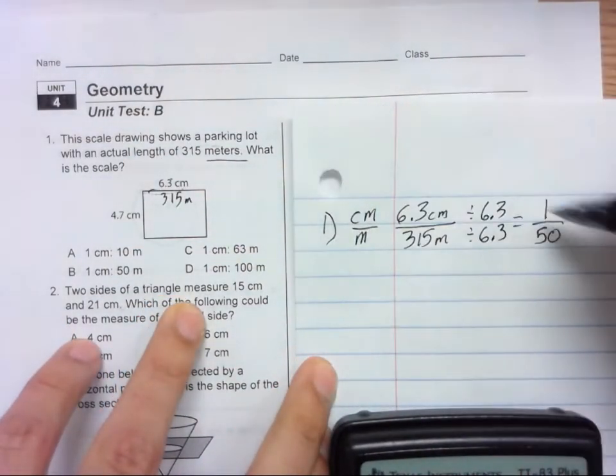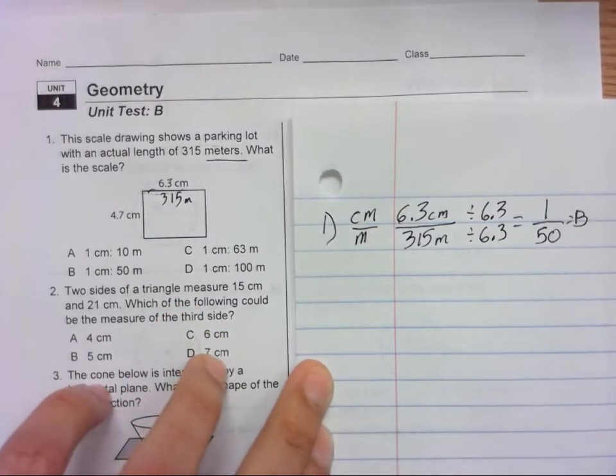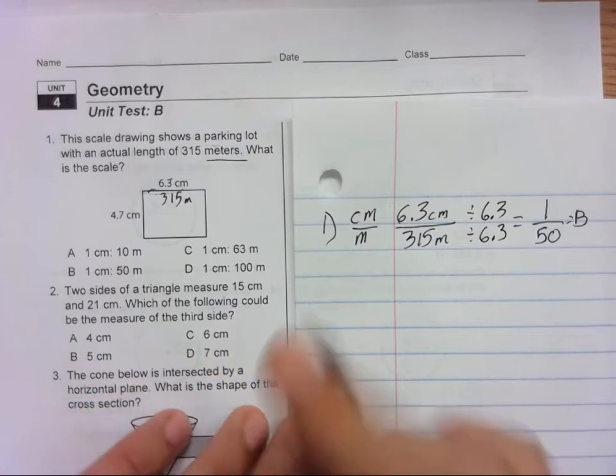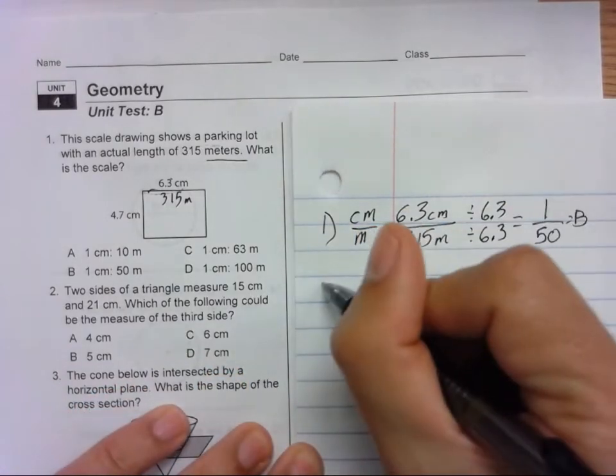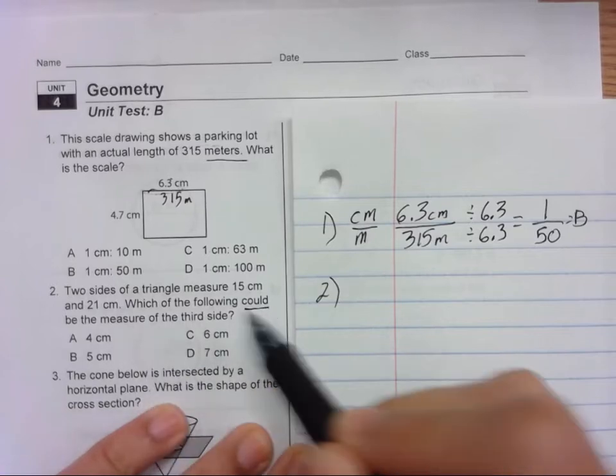So 1 is B. Moving on to 2. Two sides of a triangle measure 15 and 21. Which of the following could be the measure of the third side?